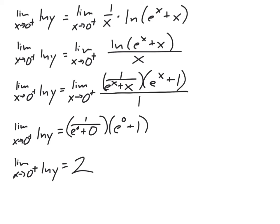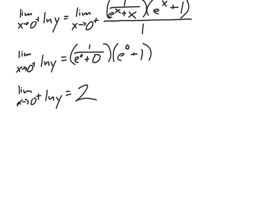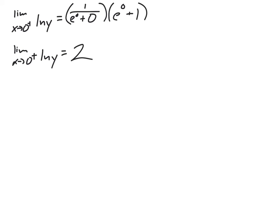We now know the limit as x approaches 0 from the right of the natural log of y equals 2. But I'm not done yet — I still need the limit of y, not the natural log of y. So I raise both sides to e: e to the natural log of y equals y on the left, and e to the power of 2 on the right. You can calculate it as a decimal or just leave it as e squared.